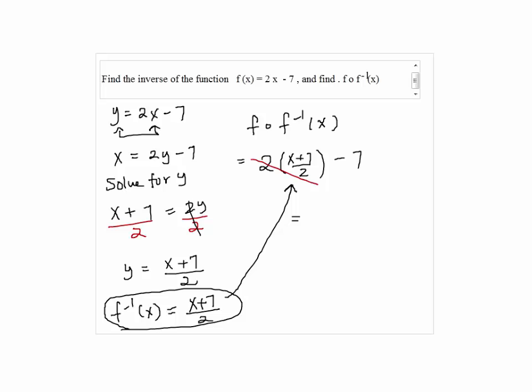So by canceling 2 and 2, we have x plus 7 minus 7. So the answer will be x.